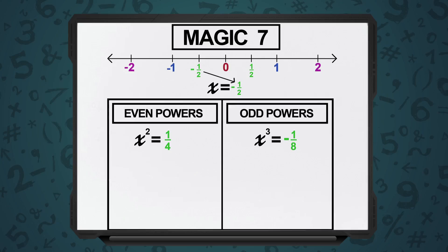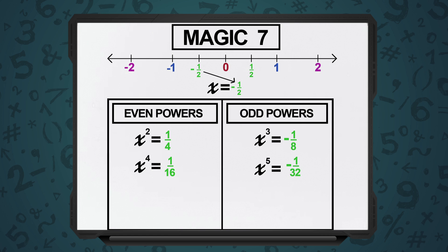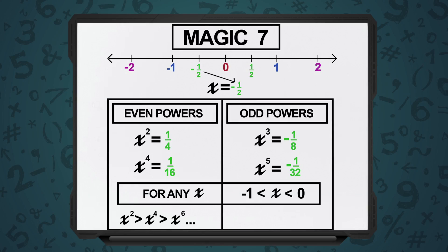Now let's come to the odd powers. x is equal to minus half, so x cubed will be minus 1 upon 8. Both of them are to the left of 0 — but which one is closer to 0? It's x cubed. So whenever we have odd powers, in the case of x equal to minus 1 upon 2: minus 1 upon 2 is less than x cubed, which is minus 1 upon 8, which in turn is less than x raised to power 5, which is minus 1 upon 32. So if x is equal to minus half, for odd powers: x is less than x cubed, less than x raised to 5, and so on and so forth.